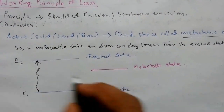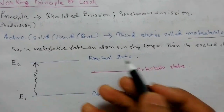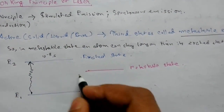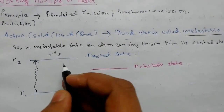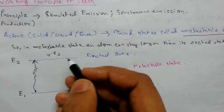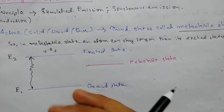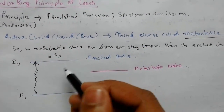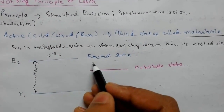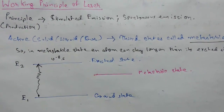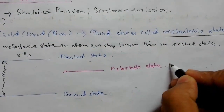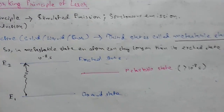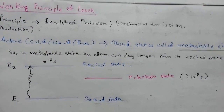But the atom can remain in the excited state for only a limited time, that is 10 to the power minus 8 seconds. Due to this small lifetime, as soon as the atoms drop back by spontaneous emission, many of them will be trapped in the metastable state, where the lifetime is greater than 10 to the power minus 8 seconds.